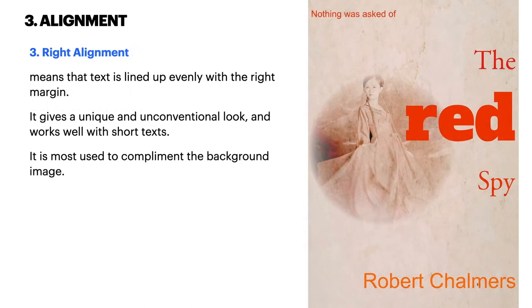Right alignment means text is lined up evenly with the right margin. It gives a unique and unconventional look and works well with short text. It is most used to complement the background image. You can see that the background image stands alone from the text, which is all moved to right alignment — except for the tagline at the top.